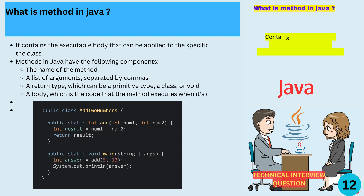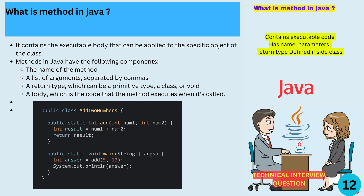Let's take a method that adds two numbers and returns the result. Here's the full method: public int add(int num1, int num2) { int result = num1 + num2; return result; }. This method takes two integer arguments and adds them together, then returns the result. This method can be called like this: int answer = add(5, 10). In this case, the method would add 5 and 10, then return the result, 15, to the variable answer.